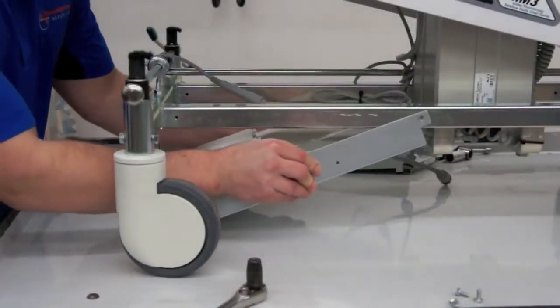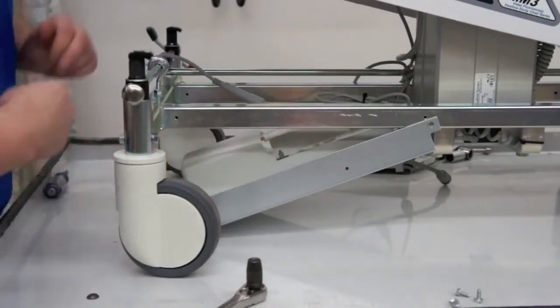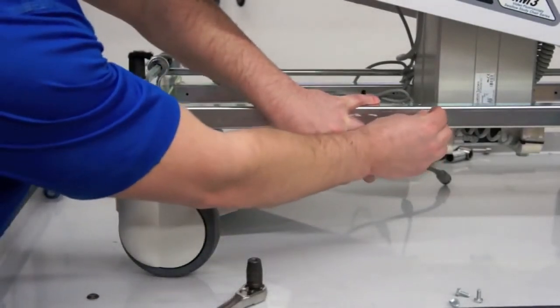Reinstall your control box bracket. Front end first, then back. Securely tighten all four screws.